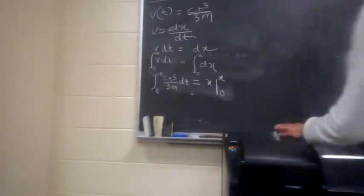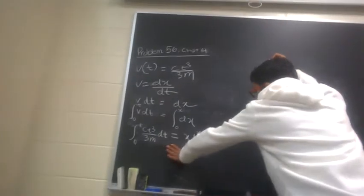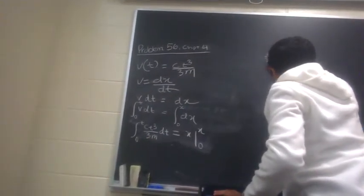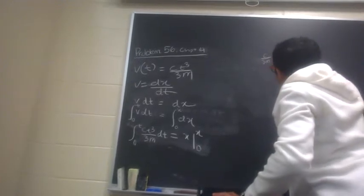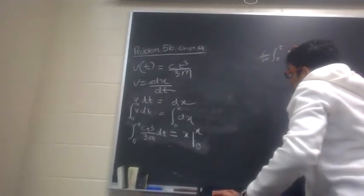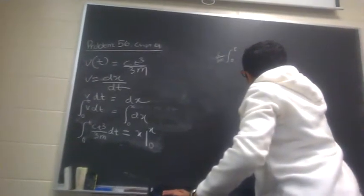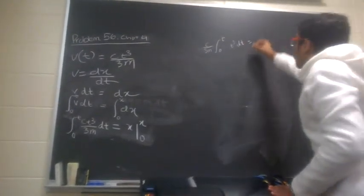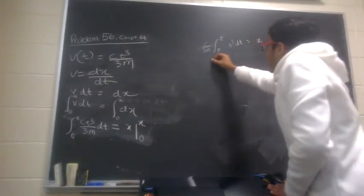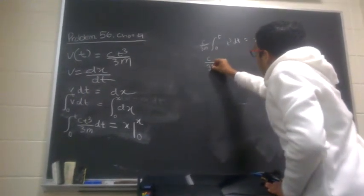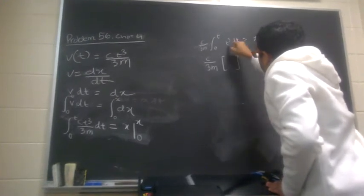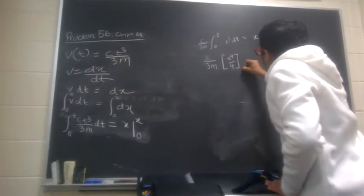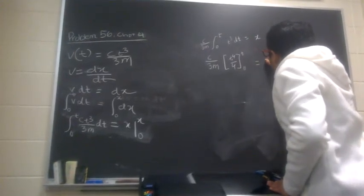So now, just continuing the calculations, from the left-hand side, we can just take out c over 3m common, because it's a constant, so we can take it out of the integral, and 0 to t, t cubed, is equal to x evaluated at x minus x evaluated at 0, which is just x. And then, we get c over 3m into the integral of t cubed, is t raised to 4 divided by 4, evaluated at 0 and t, is equal to x.